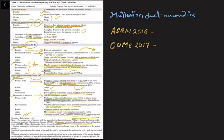This covers the ASRM 2016 and CUME 2017 guidelines. We have discussed internal indentation, angle of indentation or divergence, and external indentation.